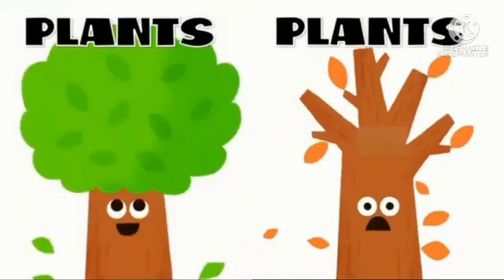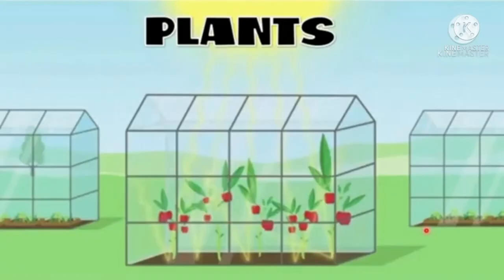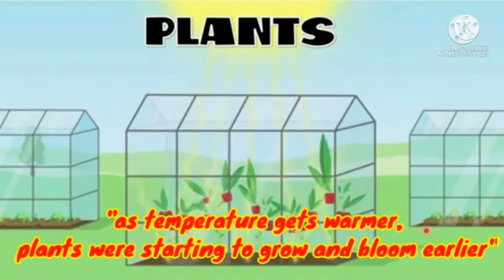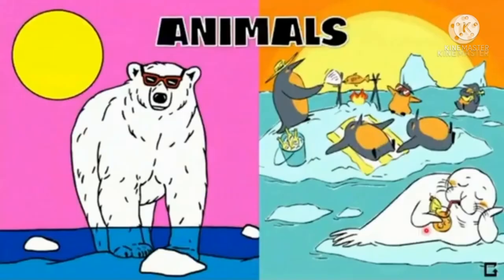Second, plants. Climate change also alters the life cycle of plants. For example, as temperature gets warmer, many plants are starting to grow and bloom earlier in spring and survive longer into the fall.